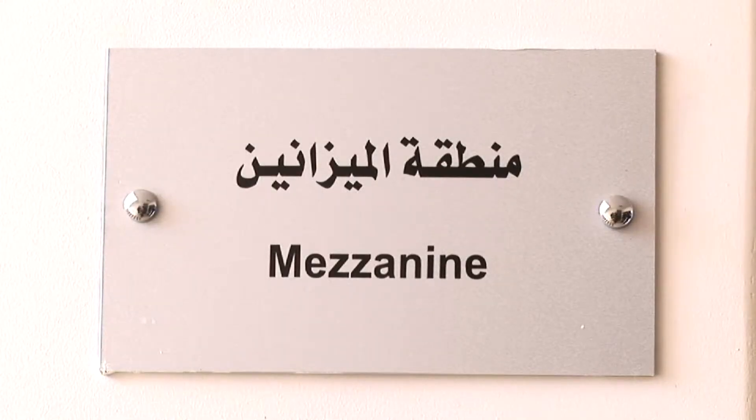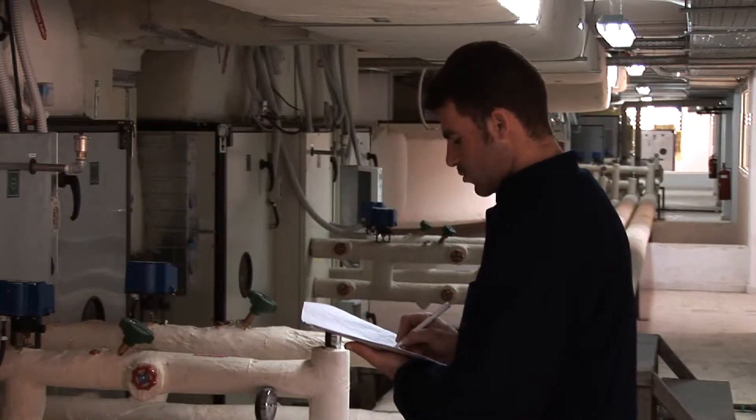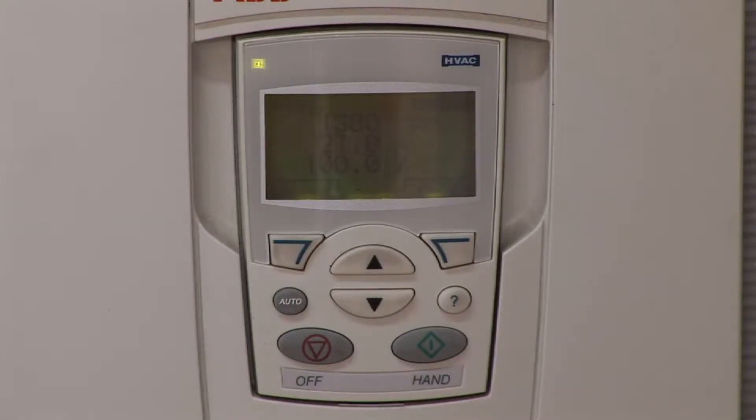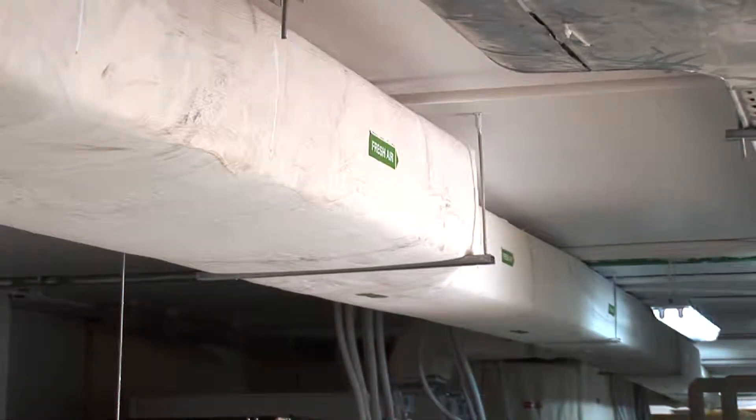Clean air is also a key element in ensuring a high quality product. Hence, all stages of production, as well as storage areas, are supplied clean air by special air treatment units that utilise micro filters to ensure specific levels of temperature, humidity, pressure and quality.